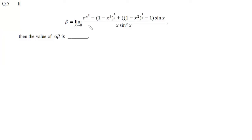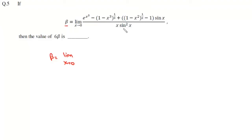In question number 5, we are given a limit which is equal to beta, and we need to find the value of 6 beta. We will solve this using expansion, so we can write beta as this limit as x tends to 0. Since the minimum power in the denominator is x cubed, we will restrict ourselves to x cubed and lower powers.